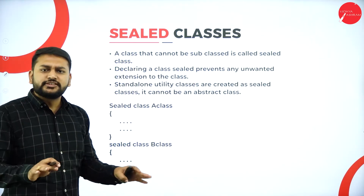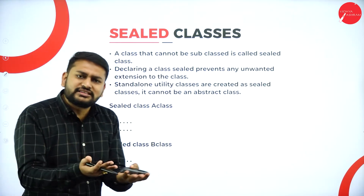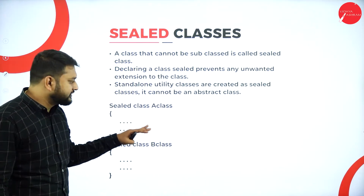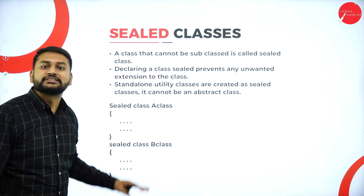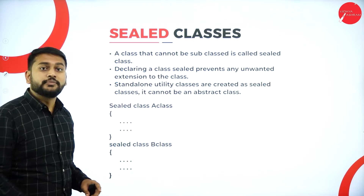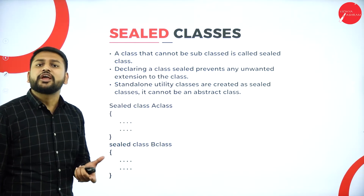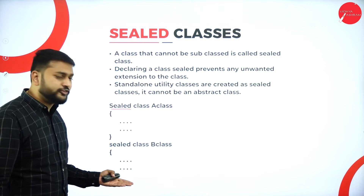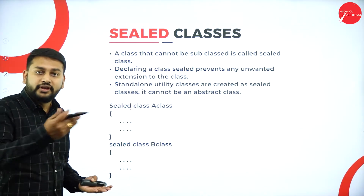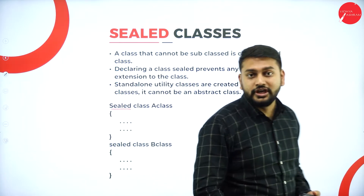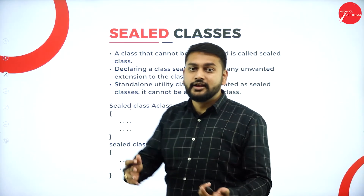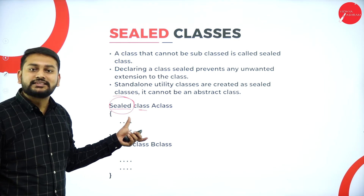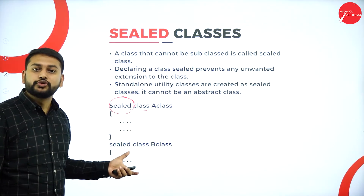Moving on to sealed classes — sealed means it's the last stage, you cannot do anything further. Whenever I make a class sealed, I cannot inherit or derive from it. It's something like the private access specifier. Once you use the keyword sealed before the class, that class is at its last stage and you cannot use it further for inheritance.